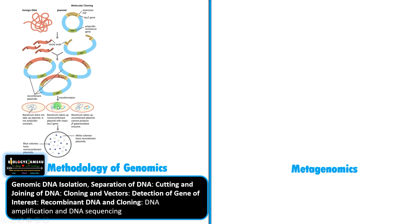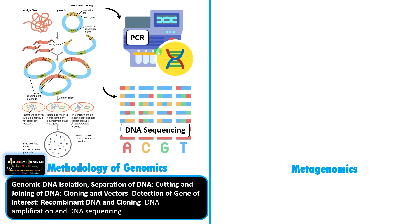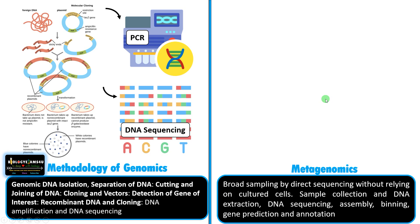After cloning, recombinant DNA is made for the study of expression patterns. DNA amplification is performed by PCR, followed by further DNA sequencing. DNA sequencing is involved in both genomics and metagenomics.